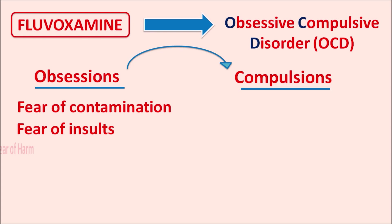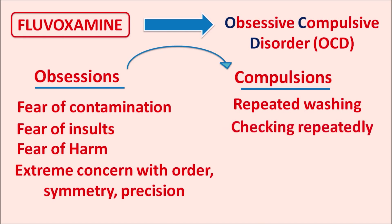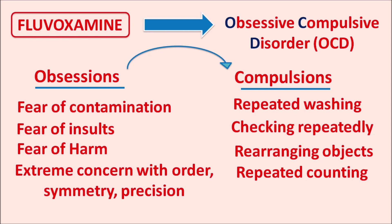This obsessive behavior leads to compulsions. For example, patients may have fear of contamination, fear of insults, fear of harm to self or others, and extreme concern with order and symmetry. These obsessions lead to compulsive behaviors such as repeated hand washing, repeatedly shaking things, rearranging objects, or repeated counting.